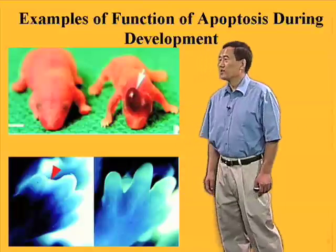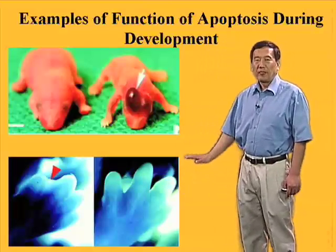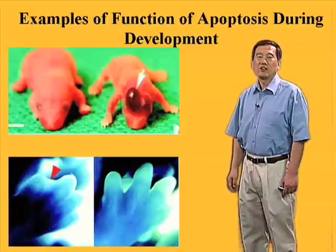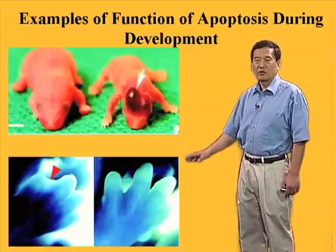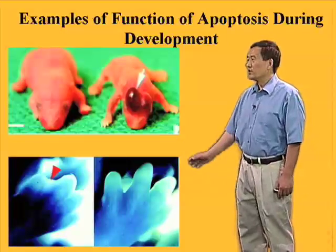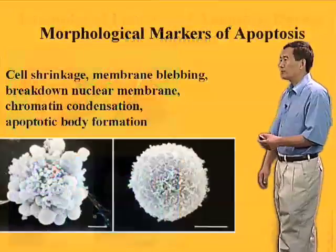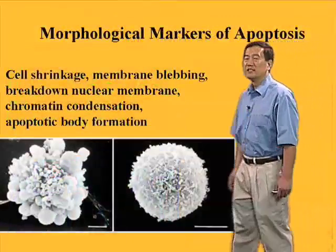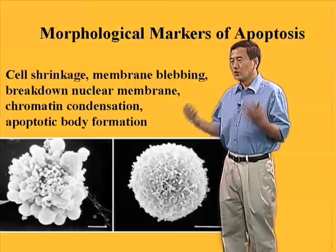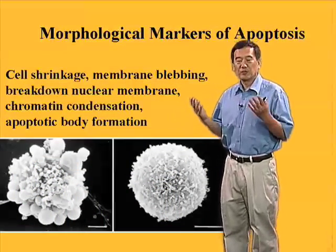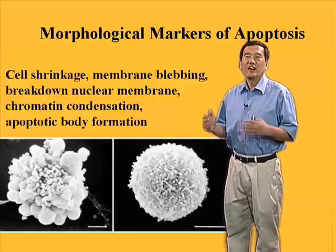Another well-known example is the recession of the interdigital web. The cells making up this web have to undergo apoptosis at a particular time during development to give us nice fingers and toes. So we know apoptosis is important, and we really want to study the molecular details about apoptosis — how it all starts.